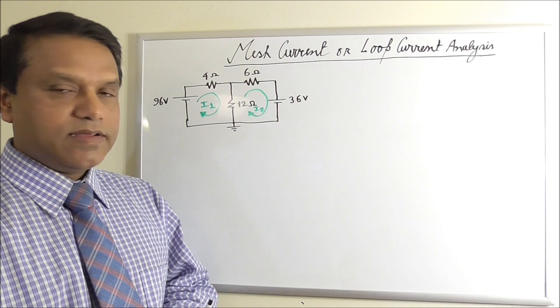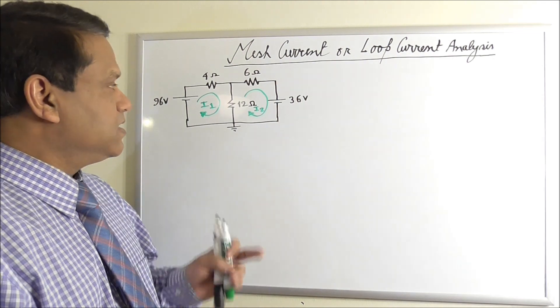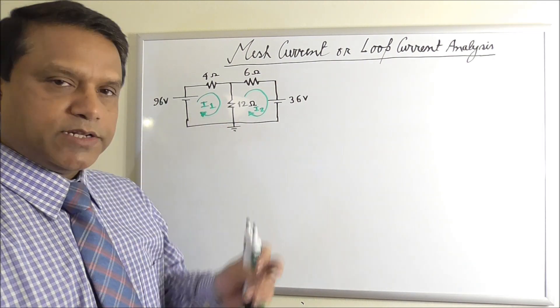The concept of mesh current is just a trick to have fewer number of variables. Instead of three variables, three branch currents, we have only two variables, I1 and I2.